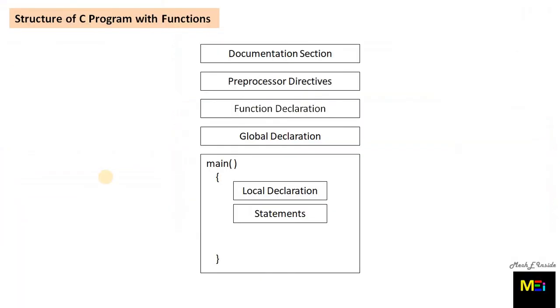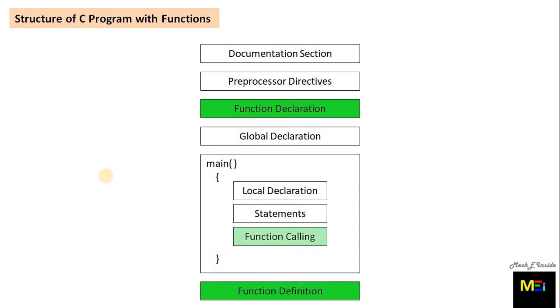Now let's look at the structure of C program with functions. Function declaration is done before or after the global declaration section, then comes the function definition which is done after the closing curly bracket of main function. Execution of the program will always begin by carrying out the instructions in the main function, so we make the function call in the main function.